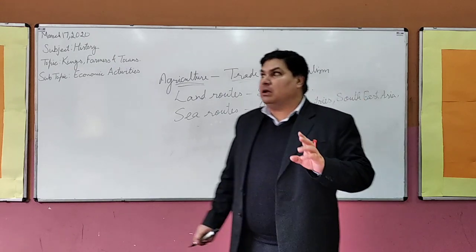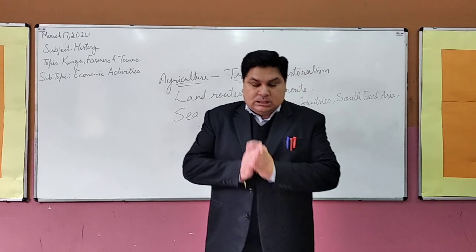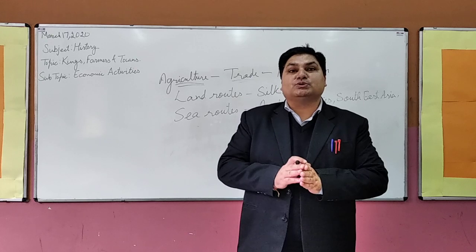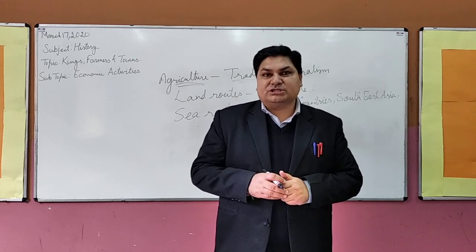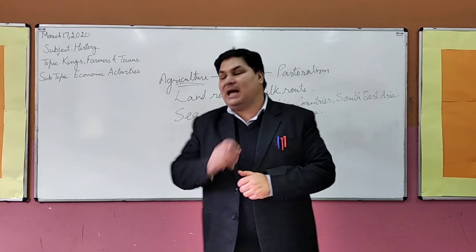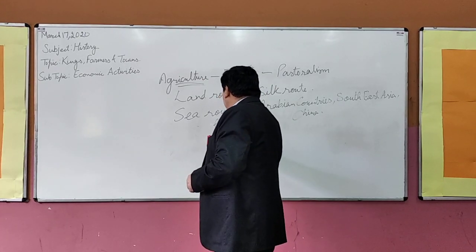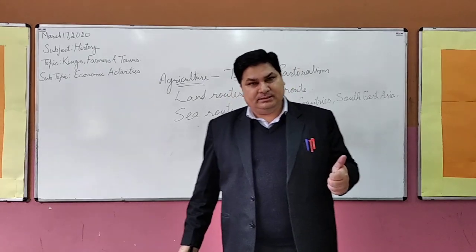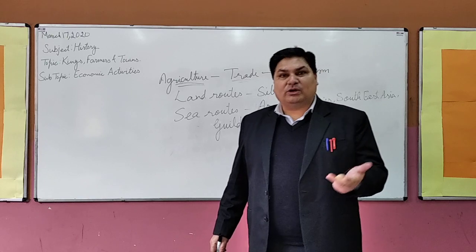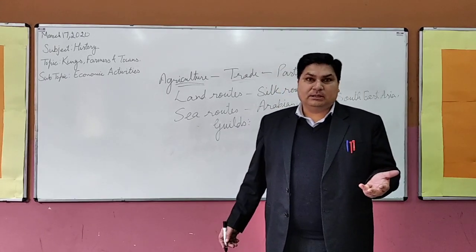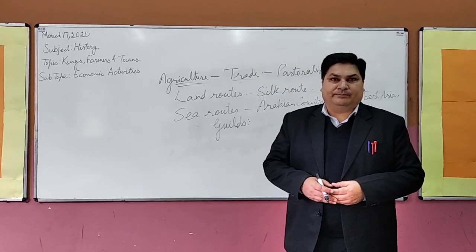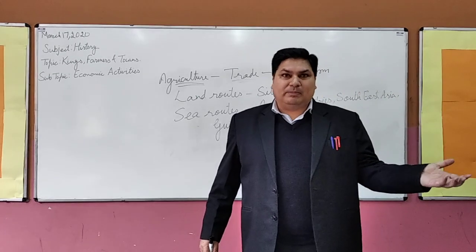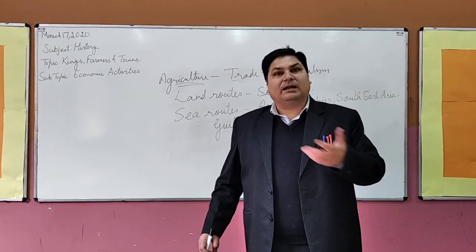There are two more things worthy of mention. First, trade was carried out not by individuals but by associations of traders. These associations were called Guilds. These guilds provided finance, shipping, movement of goods and services, and insurance. Guilds were also associated with artisan groups like blacksmiths, goldsmiths, carpenters, and others.